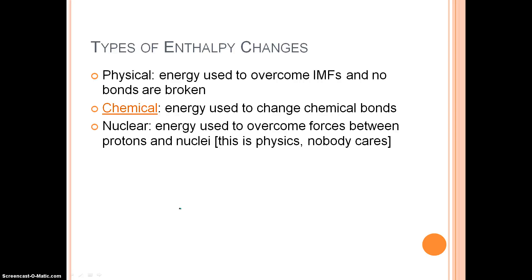In a chemical change, energy is being used to change chemical bonds — we're restructuring bonds. For example, a reaction between sodium and chloride to form sodium chloride involves bonds being formed; that's a chemical change. The enthalpy change for chemical reactions is much bigger than for physical changes, because the energy needed to overcome chemical bonds is much greater than the energy needed to overcome intermolecular forces. Bonds are much stronger than forces.